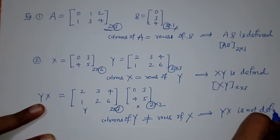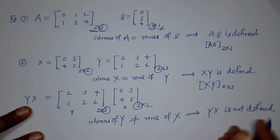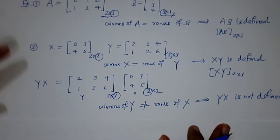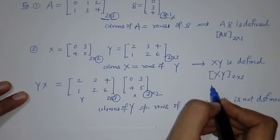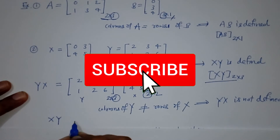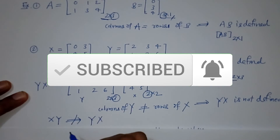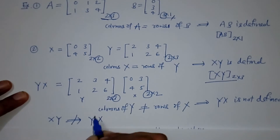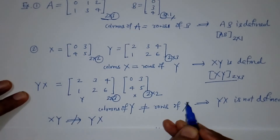That means product YX is not possible here. So for matrices X and Y, XY is possible, but that doesn't imply that YX is also possible. YX is not possible because columns of Y is not equal to the rows of X.